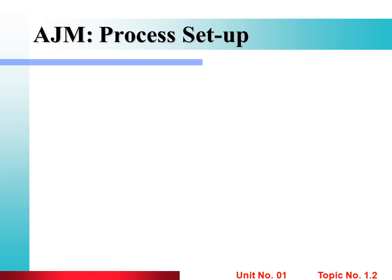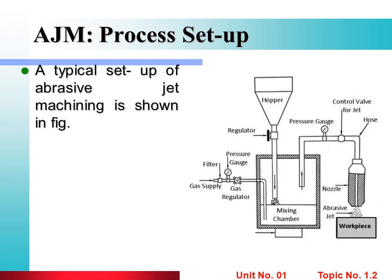Process Setup of Abrasive Jet Machine: A typical setup is as shown in the figure. First, abrasive particles or slurry are stored in a hopper, which is a temporary storage device. At the bottom, a regulator controls the flow of abrasive particles into the chamber. These abrasive particles are collected in a mixing chamber. Then, high-pressurized gas — which can be air, nitrogen, or carbon dioxide — is passed into the mixing chamber through a pipeline. The abrasive particles then travel through a hose and enter the nozzle.